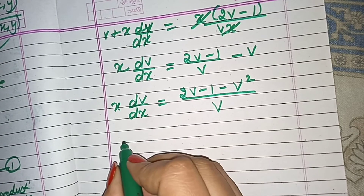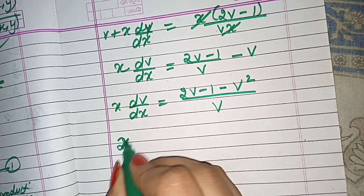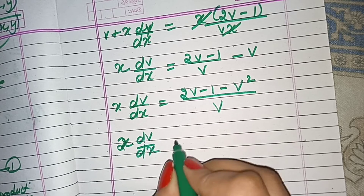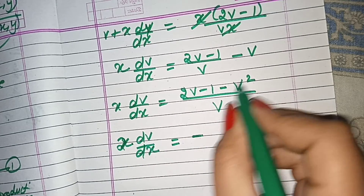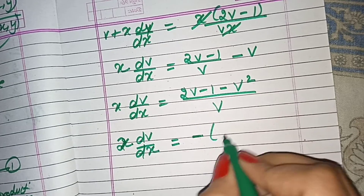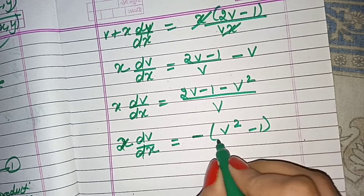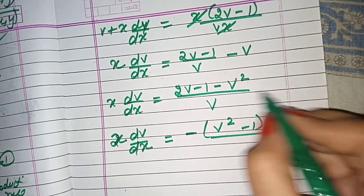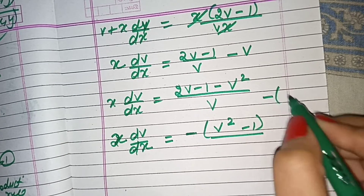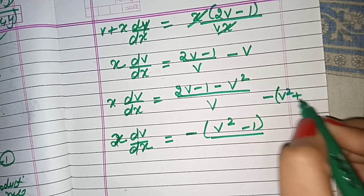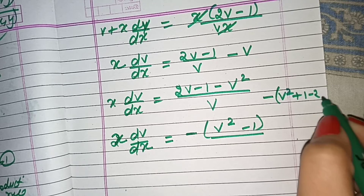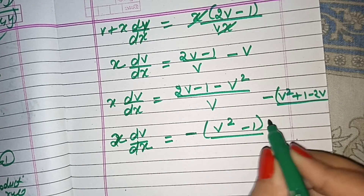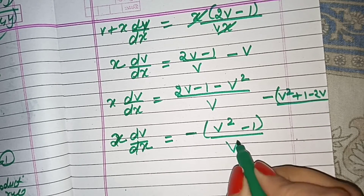Now, x dv over dx — we take minus common. So x dv over dx equals minus (v² minus 2v plus 1) over v. If you expand this, it gives v² plus 1 minus 2v, and taking minus common gives minus(v minus 1)² over v. We write this as minus (v minus 1)² upon v.